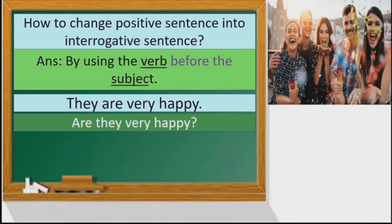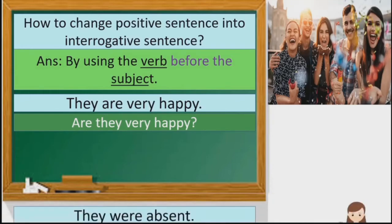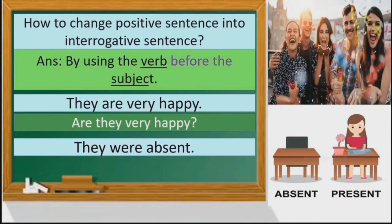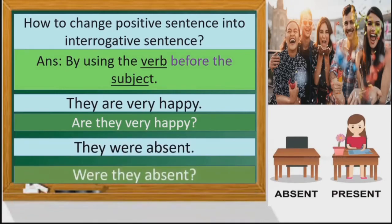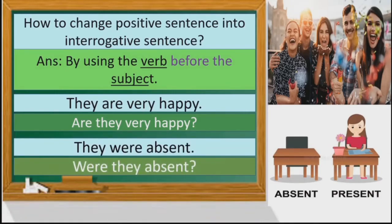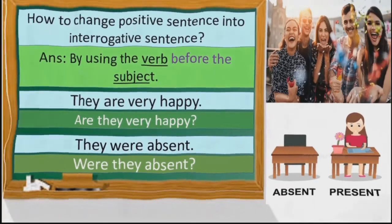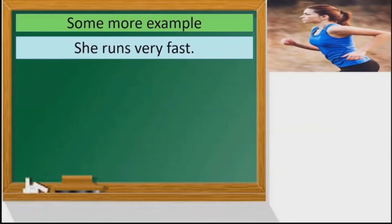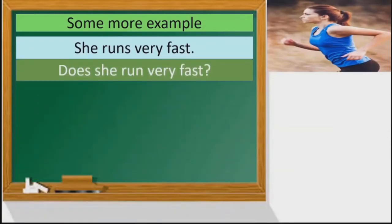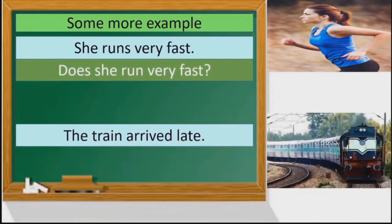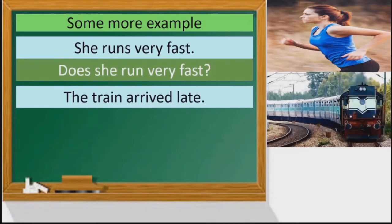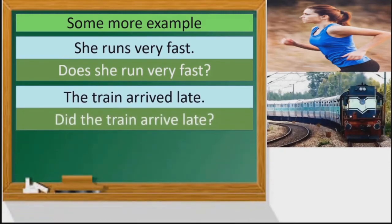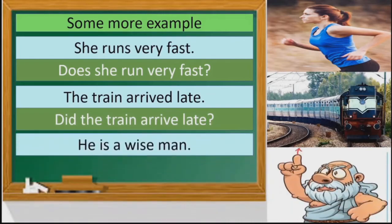Second example: 'They were absent' becomes 'Were they absent?' Some more examples: 'She runs very fast' becomes 'Does she run very fast?' 'The train arrived late' becomes 'Did the train arrive late?' 'He is a wise man' becomes 'Is he a wise man?'